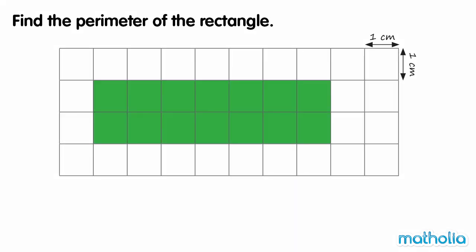Find the perimeter of the rectangle. The perimeter of a rectangle can be found by adding the two lengths to the two widths. This rectangle has a length of 7 cm and a width of 2 cm.